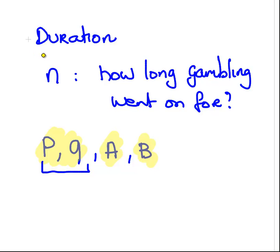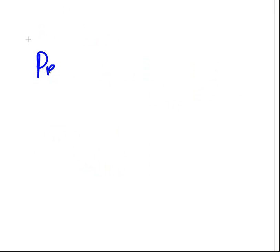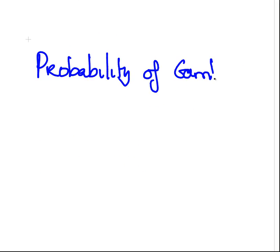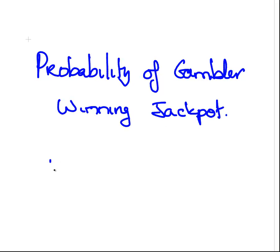Something we might also be interested in is the probability of the gambler winning the jackpot. Very unlikely, but not impossible. In fact, it will happen every so often. This would actually depend on how much losses both the gambler and the banker can withstand, and also the relative probability of winning or losing.